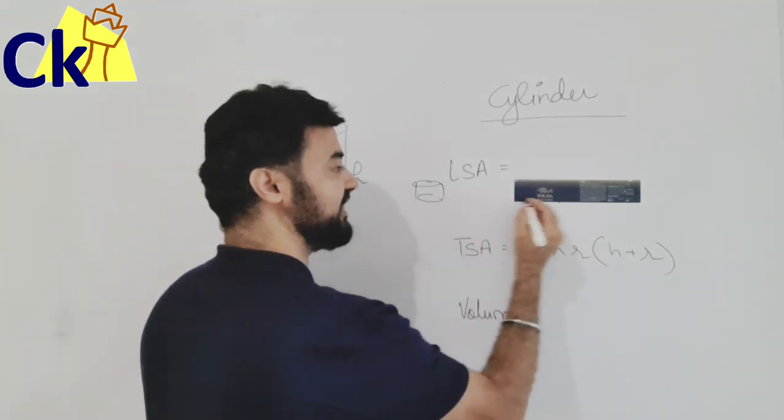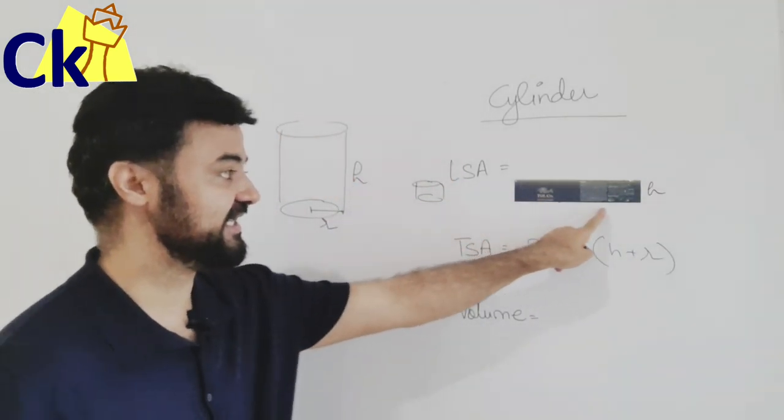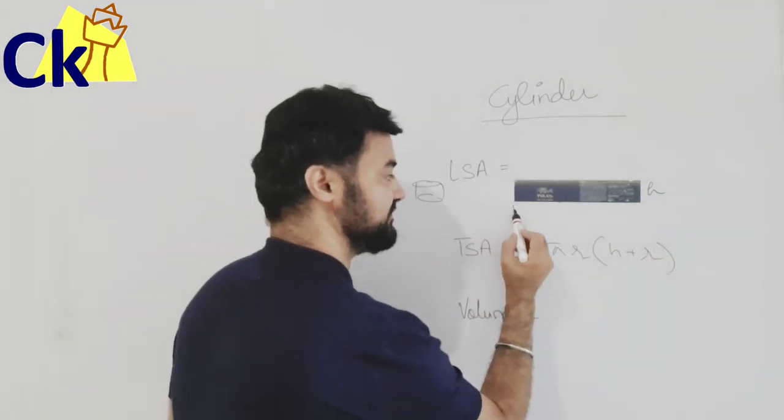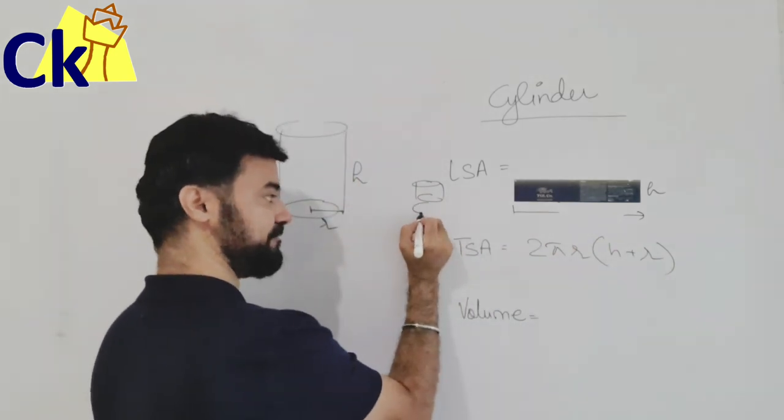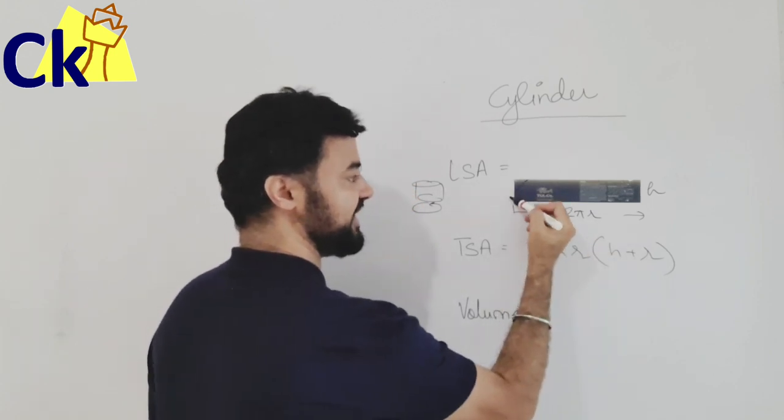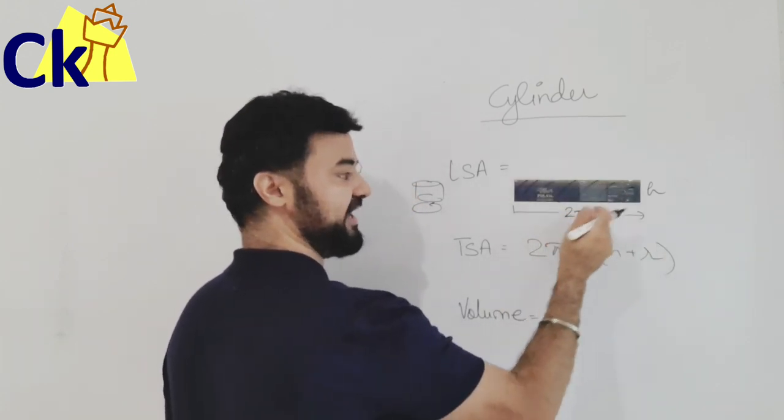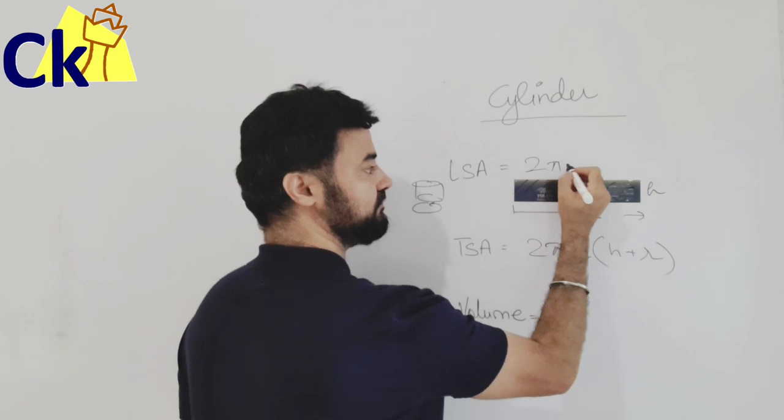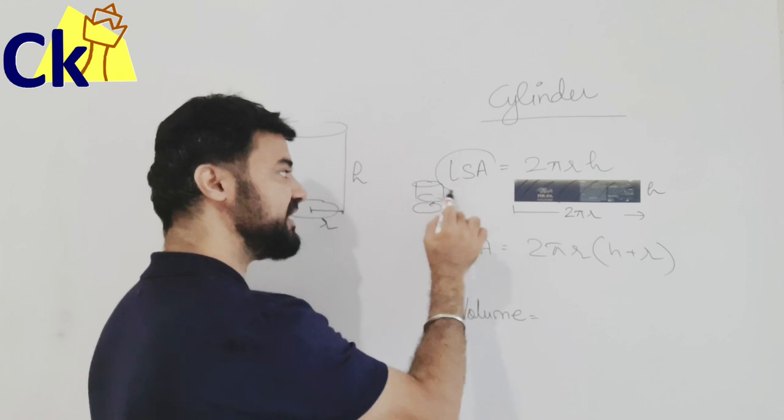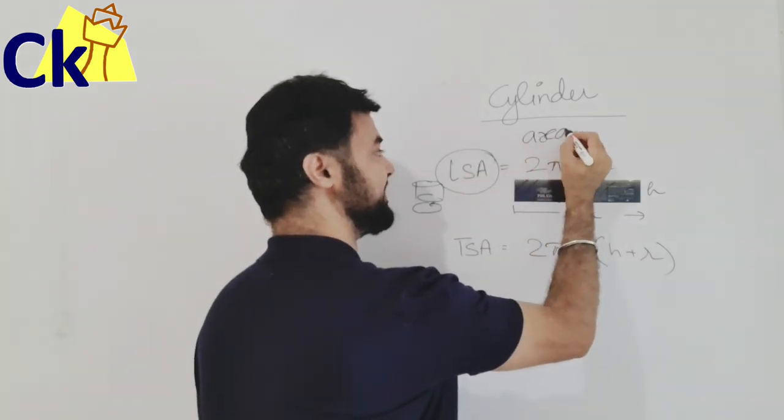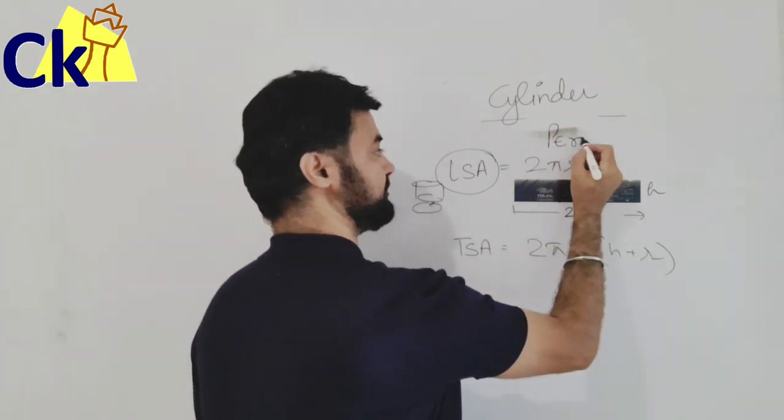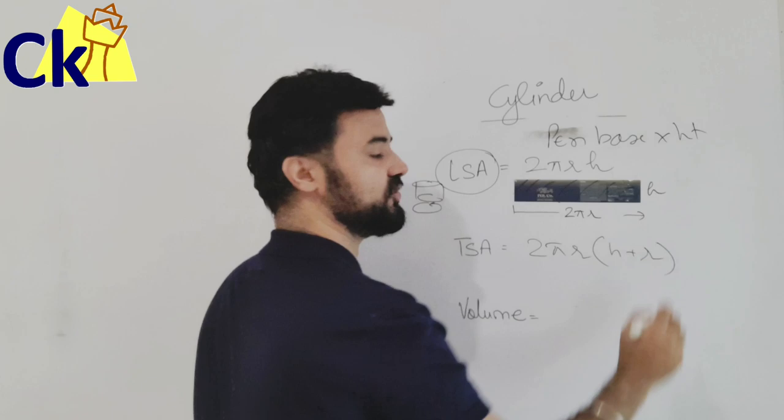Find this length, because area of rectangle is l into b. Find this base - this base is the perimeter, 2πr. Now area of the rectangle will become l into b: 2πrh. That's it. So from today onwards, all lateral surface area is nothing but perimeter of the base into height.